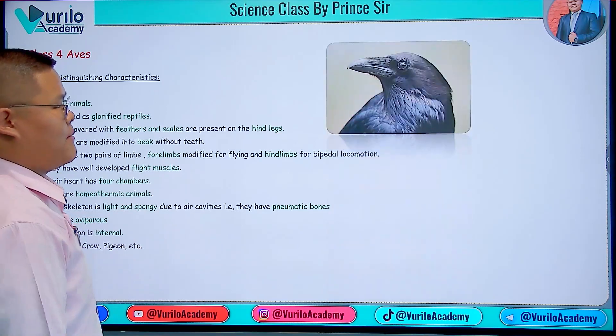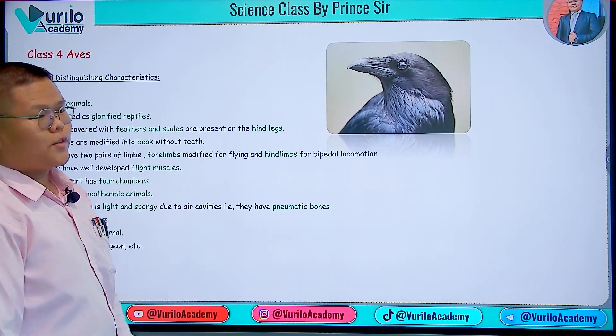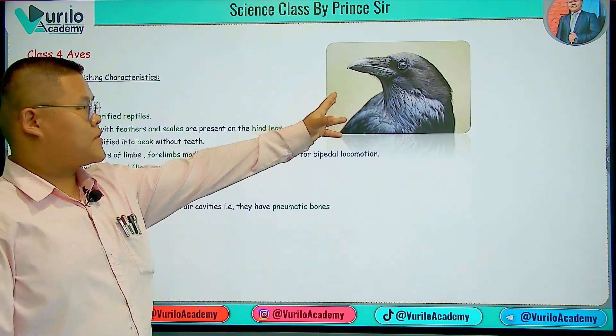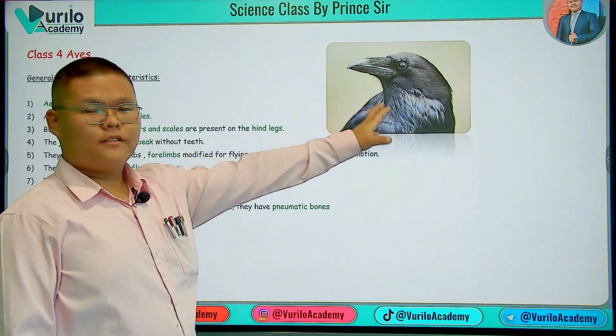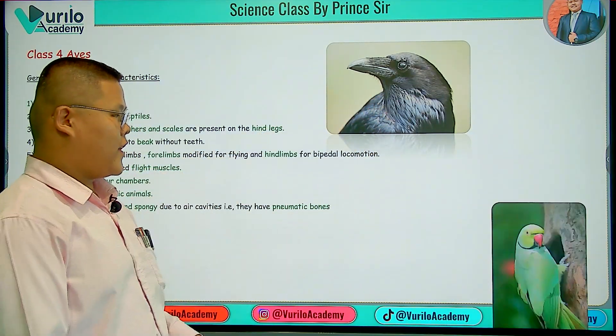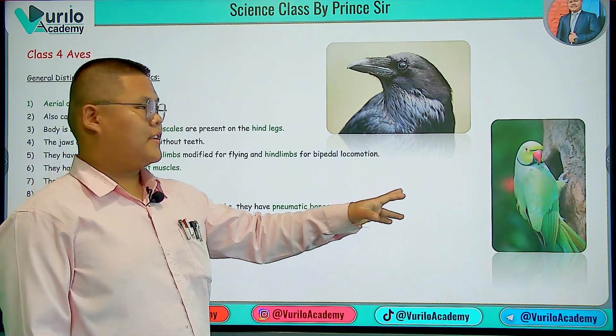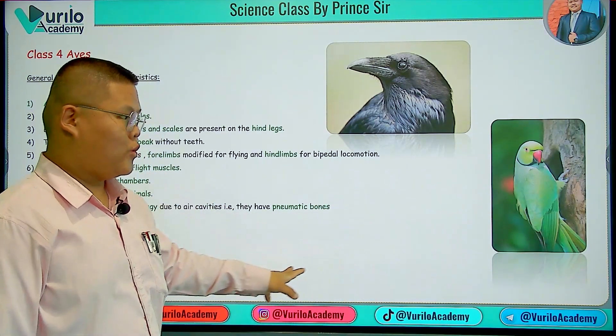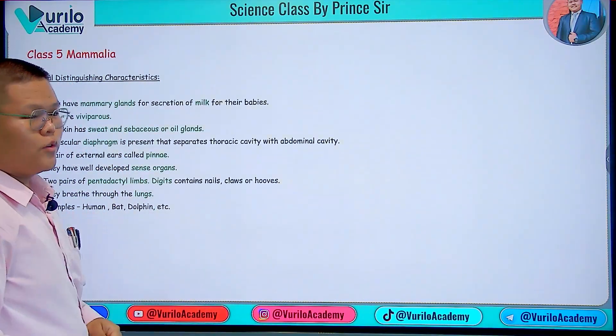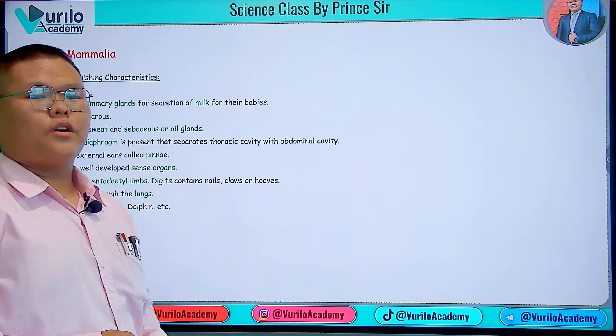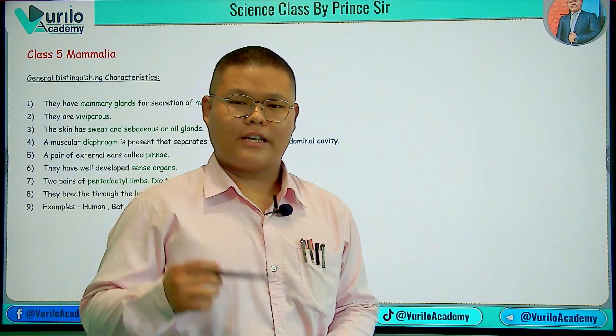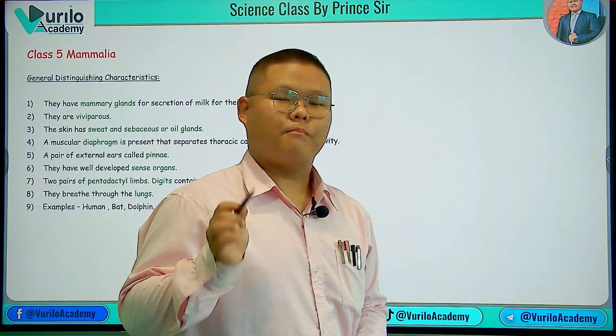Examples of Class Aves include crow and pigeon — each and every bird, except bat. The picture shown here is a crow and a parrot. In the next lecture, we're going to talk about Class Mammalia.